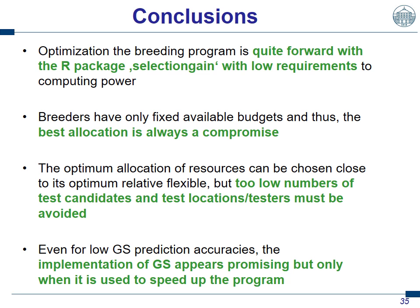To conclude: the optimization of the breeding program is quite straightforward with the R package selection gain, with low requirements on computing power. You don't need many input variables, you are quite fast, and you get meaningful results. As a breeder you have only a fixed budget, and the best allocation is always a compromise. This package gives you figures to avoid regions outside the optimum. Close to its optimum, the allocation of resources can be chosen relatively flexibly, but too low numbers of test candidates and test locations must be avoided. Even for low genomic selection prediction accuracies, implementation of GS appears promising, but only when used to speed up the program.